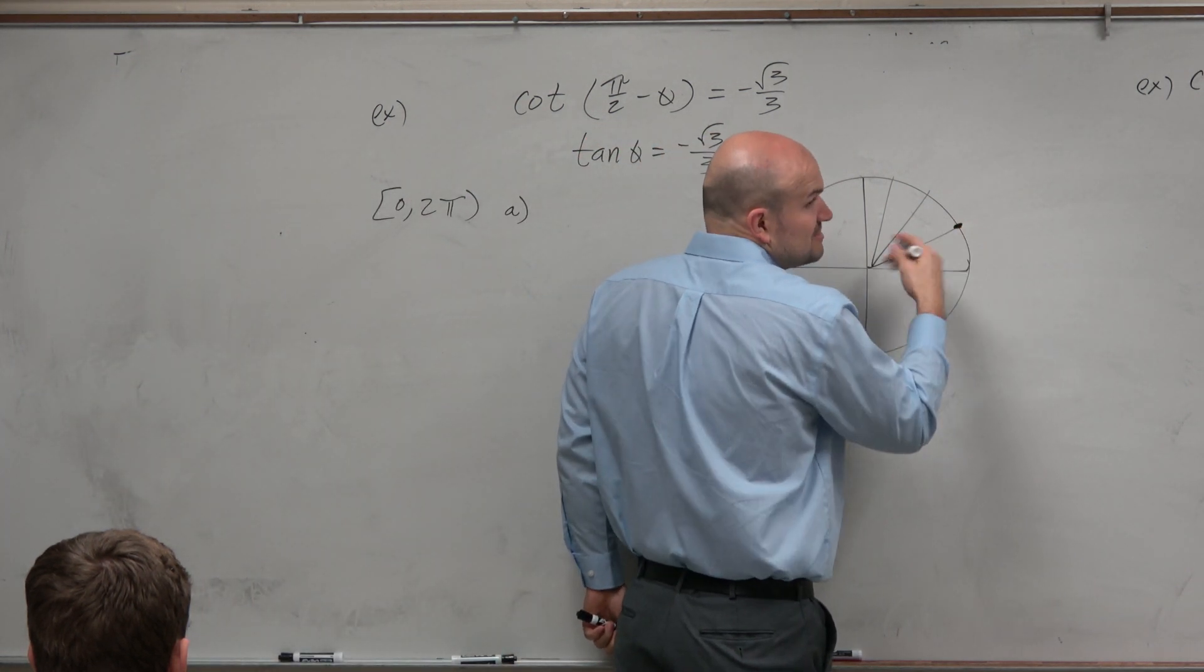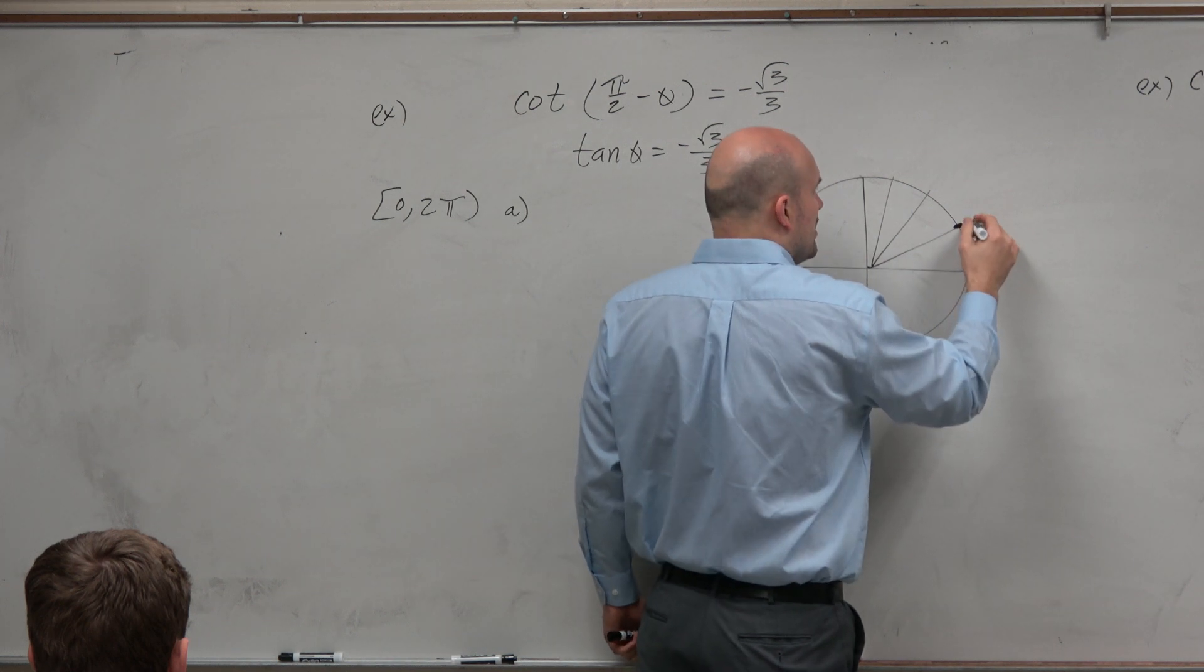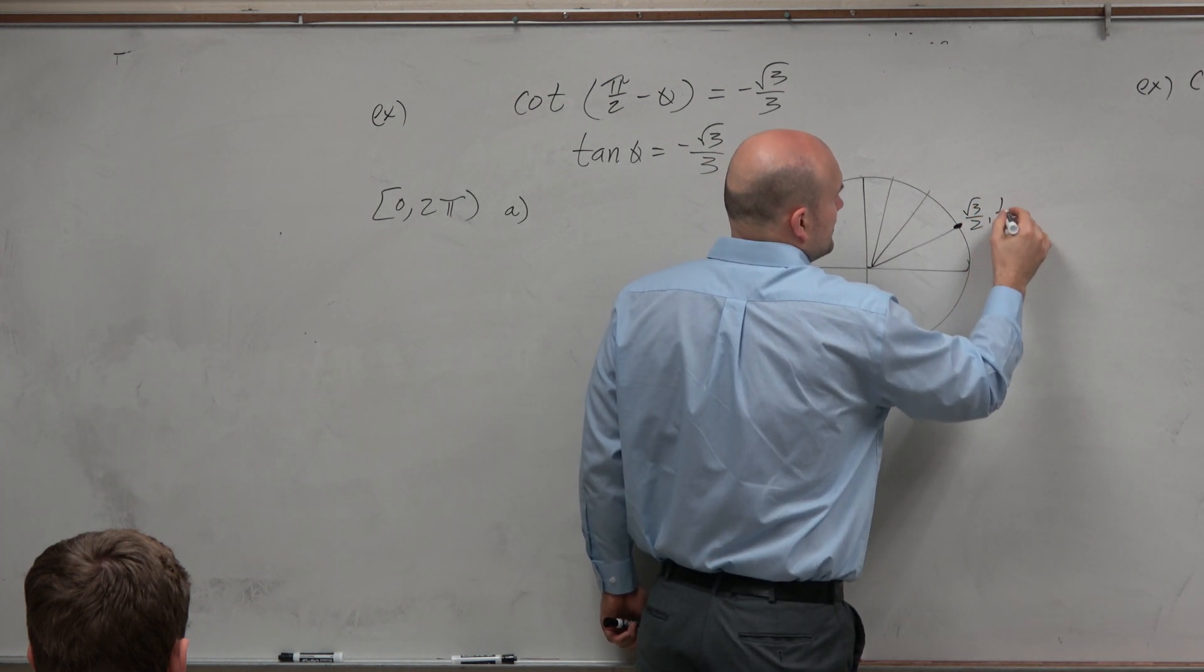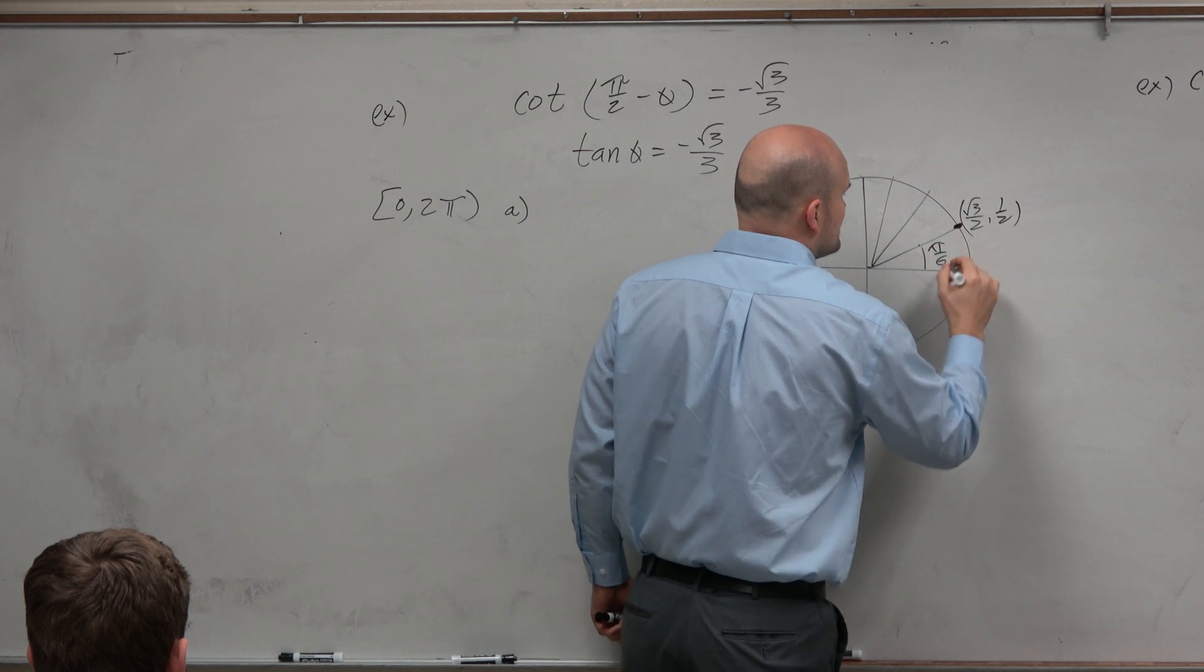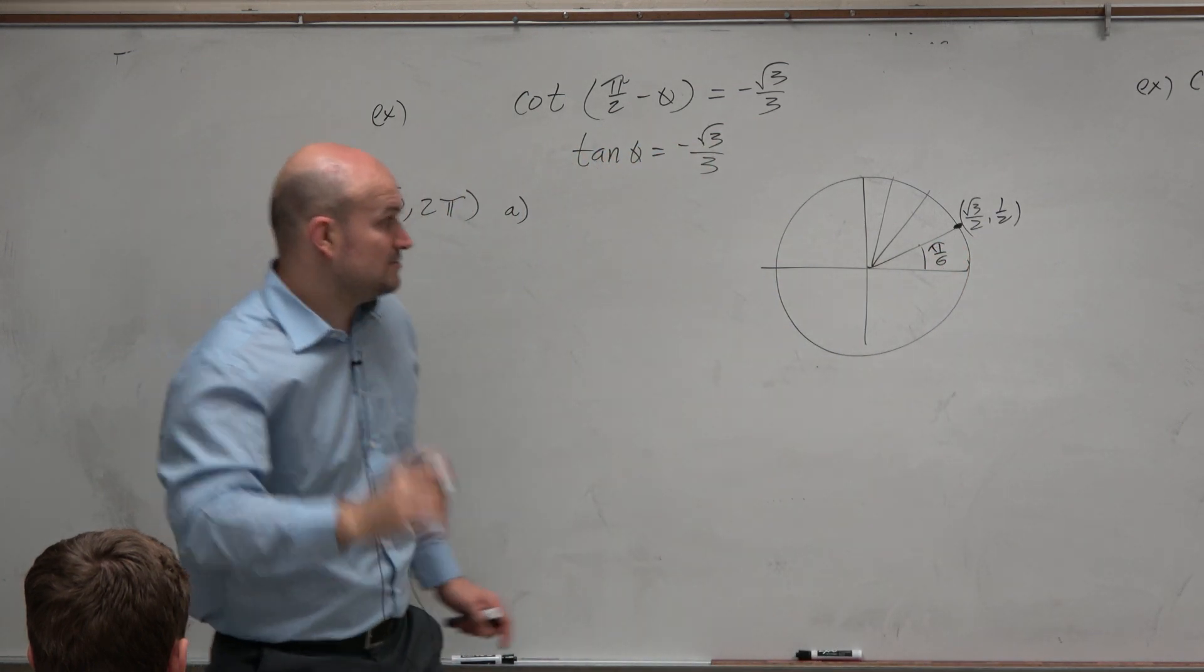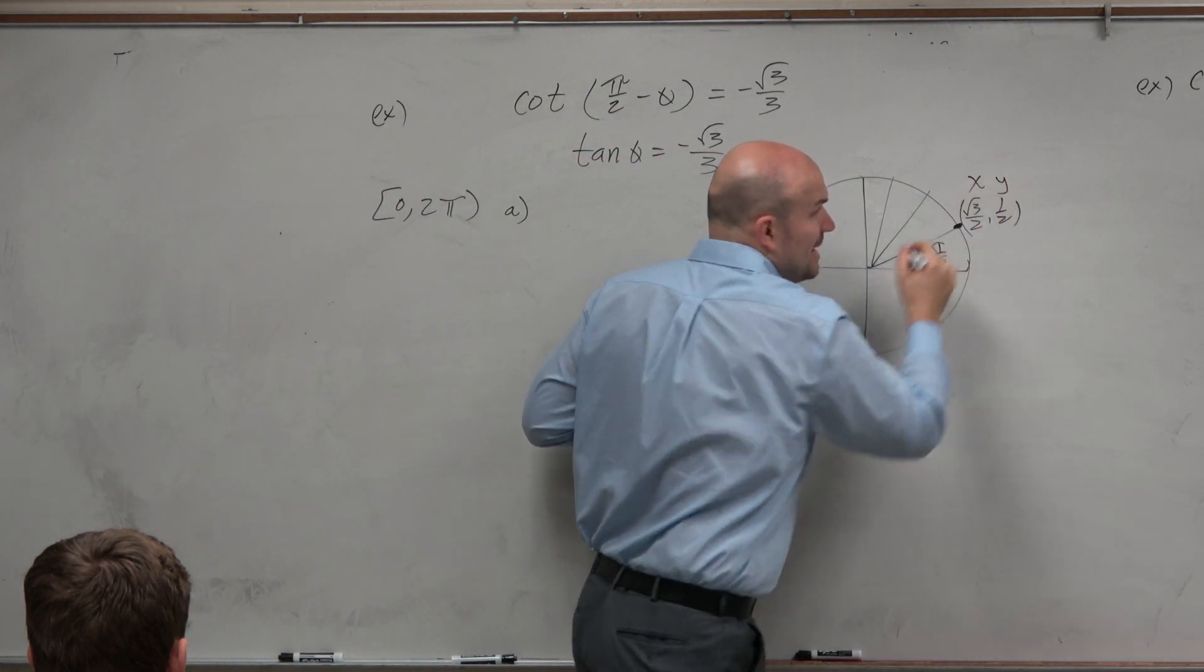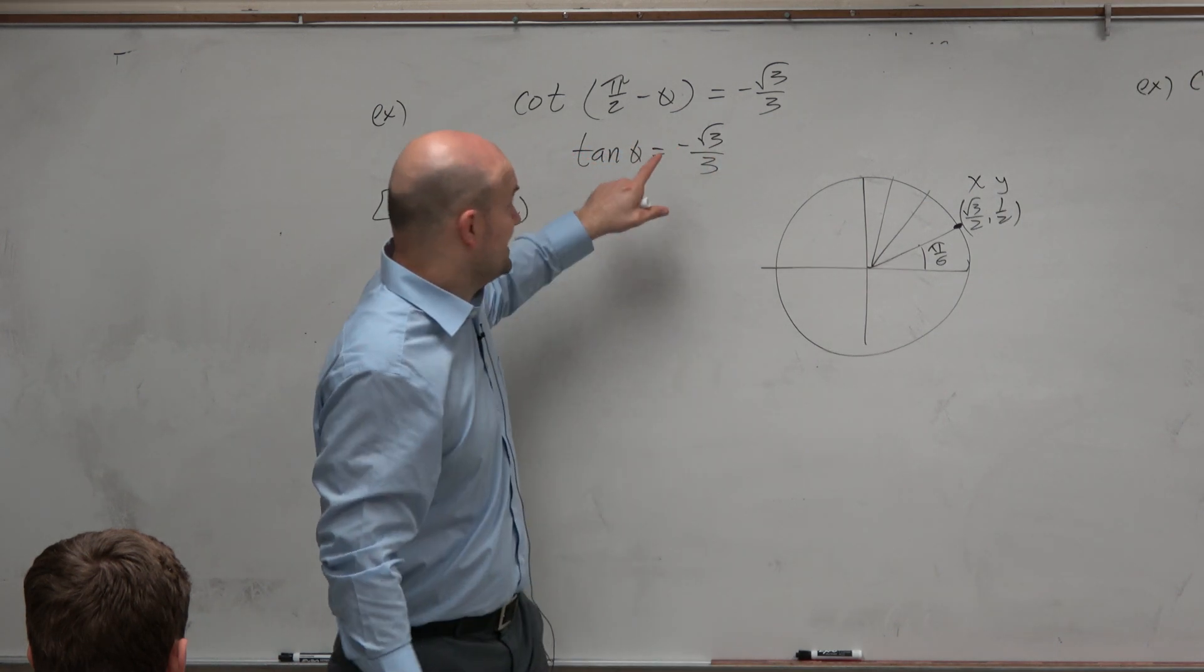Hopefully, at this point, you guys blink and you do a reflex and you say, oh, I know what that is. It is the angle π over 6. When I take π over 6, when I take my y coordinate over my x coordinate, which is tangent, I get square root of 3 over 3.